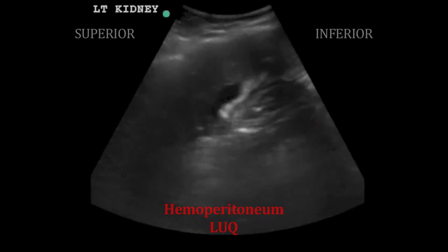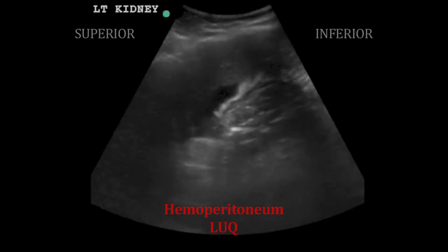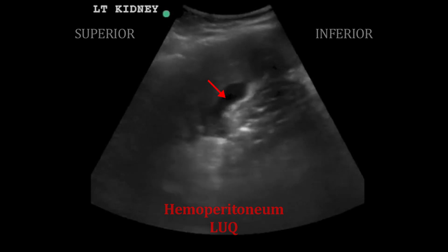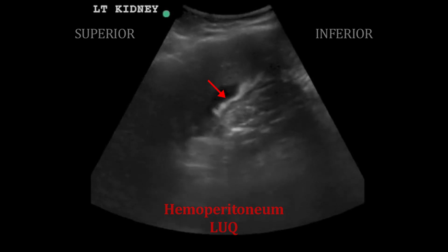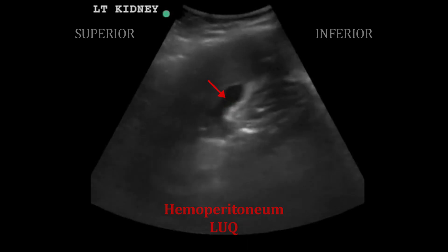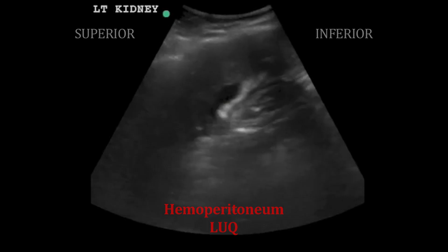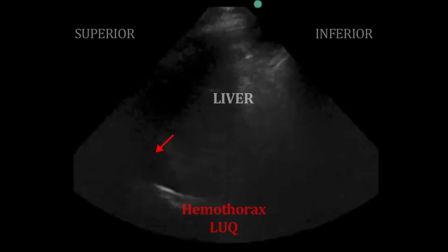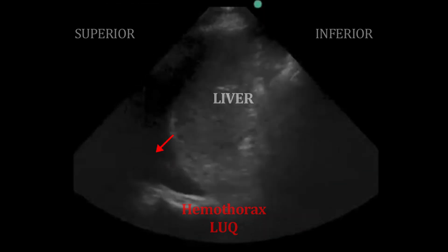Here's an abnormal scan of the left upper quadrant. Notice that there's a collection of fluid where there normally should not be. Here's another image of fluid above the diaphragm.